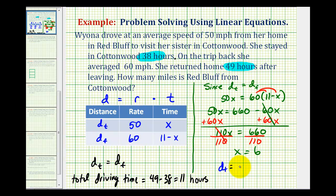So d sub t is going to be equal to 50 times 6, which is equal to 300, which means the distance from Red Bluff to Cottonwood is 300 miles.